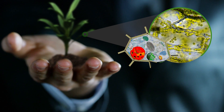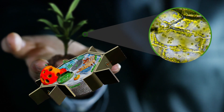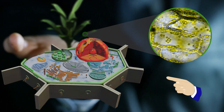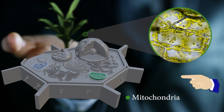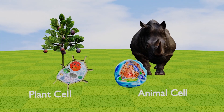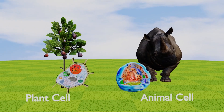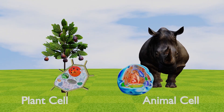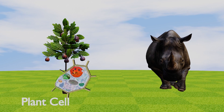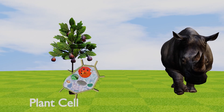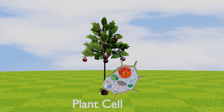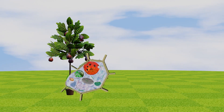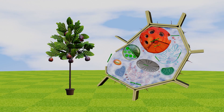A cell is made up of many cell organelles such as membrane, nucleus, mitochondria, etc. Cells are classified into two main types: plant cells and animal cells. We will discuss animal cells in the next video. Today we are discussing only plant cells. Like animal cells, plant cells are also eukaryotic — that is, they have a membrane-bound nucleus and organelles.